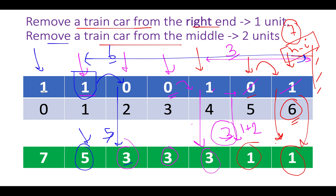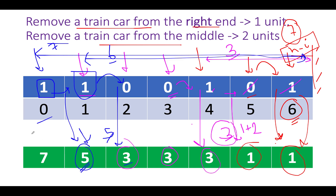Next we see another 1. First option: n minus i = 7 minus 0 = 7. Middle removal: right value is 5, so 5+2 = 7. Minimum of 7 and 7 is 7, so 7 gets set here. We have now built the complete right cost array.